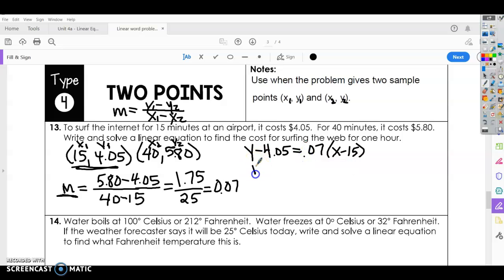Alright, so let's clean this up a bit. So y minus 4.05 equals, we're going to distribute, 0.07 times x, and then 0.07 times negative 15. Let's see, what does that equal? Negative $1.05.